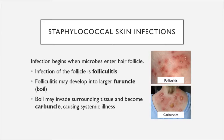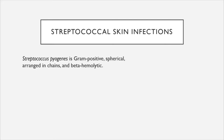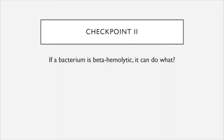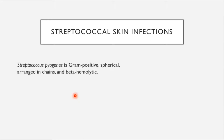Staphylococcus is not the only genus that can cause skin infections. Streptococcus pyogenes can also cause skin infections and has different characteristics than Staphylococcus. It is gram-positive and spherical, but arranged in chains rather than clusters, as the name Streptococcus suggests, and it is beta-hemolytic. Beta hemolysis is a virulence factor possessed by Streptococcus pyogenes—as a checkpoint, recall what it means for a bacterium to be beta-hemolytic and what it can do to red blood cells.